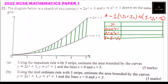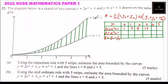Substituting into y1 equals 2x squared plus 1: when x is 0, y1 is 1; when x is 1, y1 is 3; when x is 2, y1 is 9 (since 2 squared is 4, times 2 is 8, plus 1 is 9); when x is 3, y1 is 19; when x is 4, y1 is 33; when x is 5, y1 is 51.